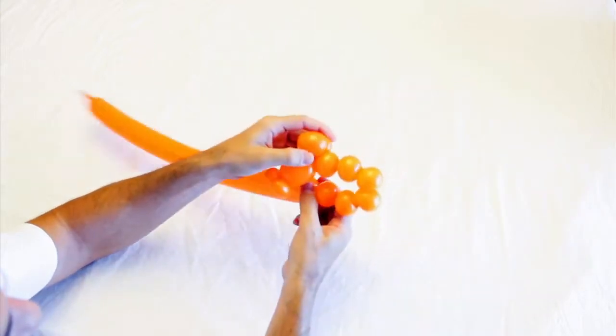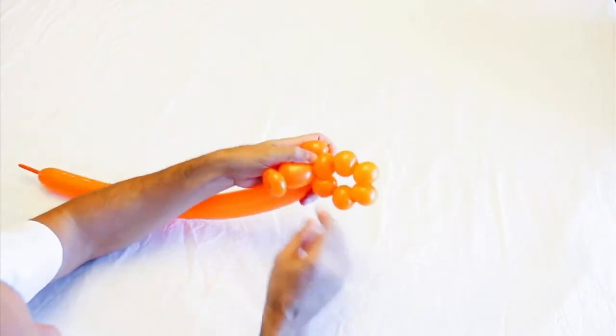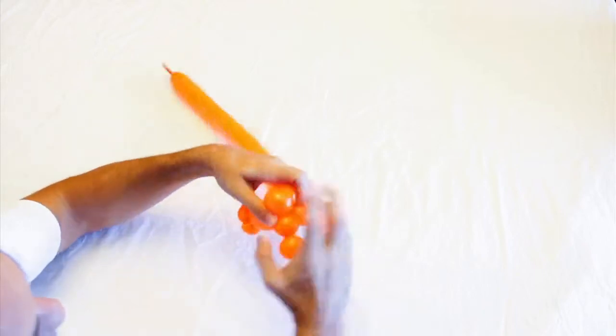Once you get six bubbles, you're going to fold these bubbles under the head, so you're making a ring under these two, and twist them together.